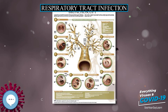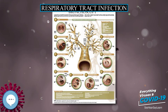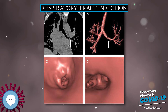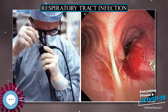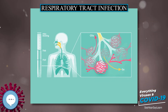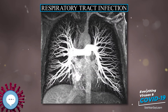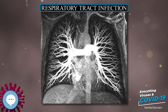Lower Respiratory Tract Infection. The lower respiratory tract consists of the trachea, windpipe, bronchial tubes, the bronchioles, and the lungs. Lower respiratory tract infections are generally more serious than upper respiratory infections. LRIs are the leading cause of death among all infectious diseases. The two most common LRIs are bronchitis and pneumonia.